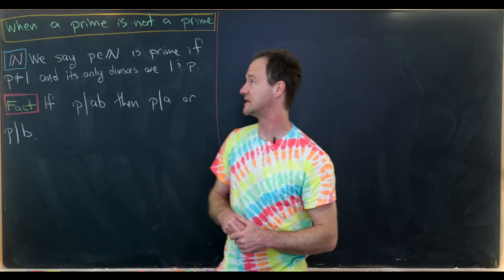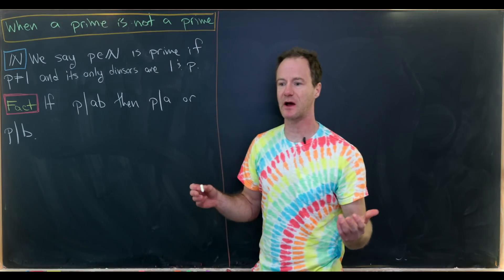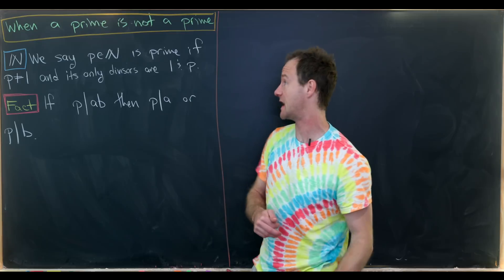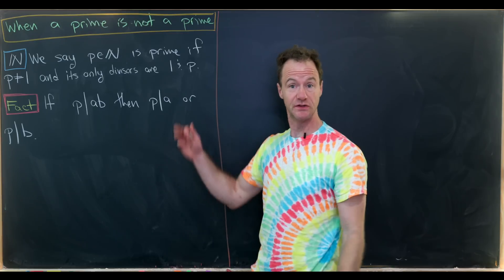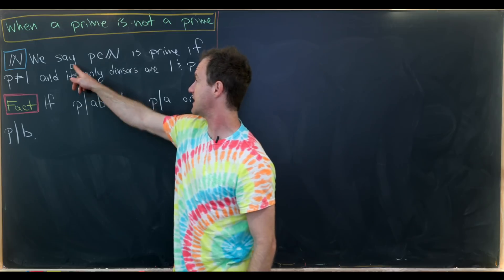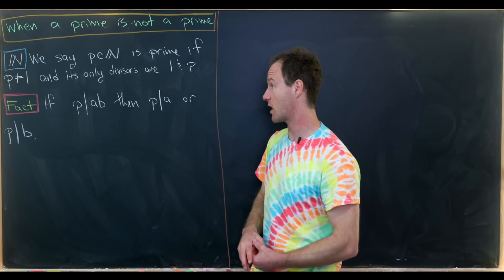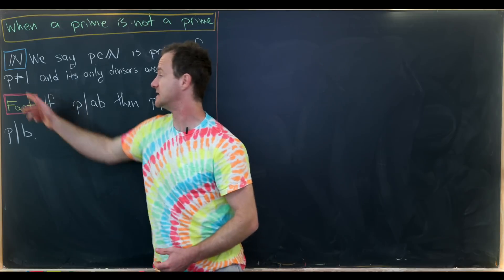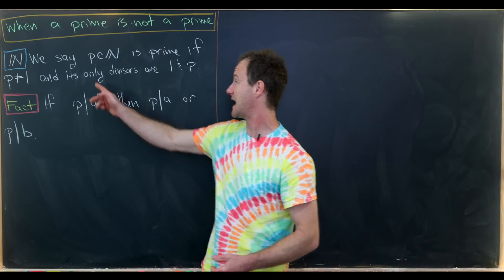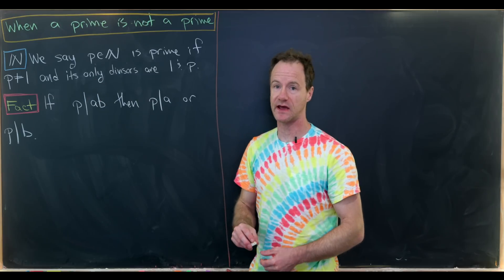Today we're going to look at a certain generalization of prime numbers. We'll start by recalling the notion of prime numbers inside the natural numbers. We say that P, a natural number, is prime if P is not equal to 1, and its only divisors are 1 and P.